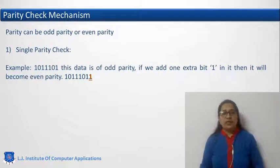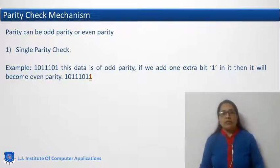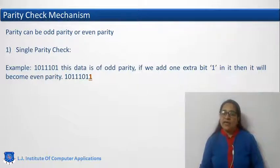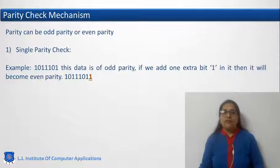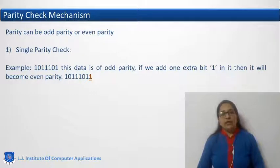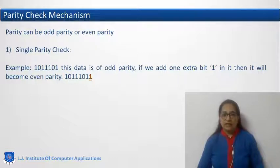The first simple technique is the single parity check. In this, the number of ones in the data are counted and we have to make it even. For example, if the data contains 5 ones, we will add one more bit to make it even. If the data already contains 4 or 6 ones, we add a 0 bit. The first added bit is called the parity bit, and we input 1 or 0 to make the whole message an even parity message.